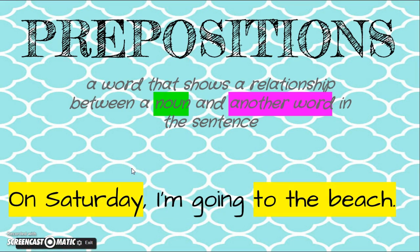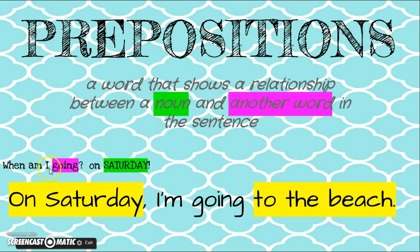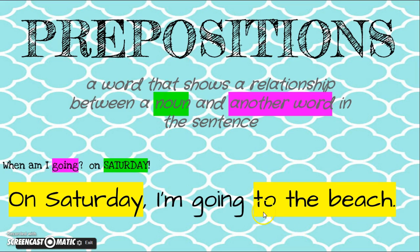So what does that mean? If I look at the sentence 'On Saturday, I'm going to the beach,' the first prepositional phrase here is 'on Saturday.' It's got a noun here, Saturday. When am I going? The preposition 'on' shows a relationship between when I'm going and Saturday. The relationship is between the noun Saturday and going. I've got another prepositional phrase over here, 'to the beach.' The noun at the end of this phrase is beach, and it's showing a relationship back to going.